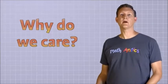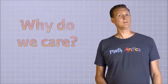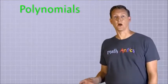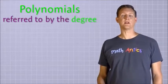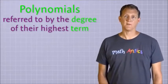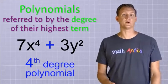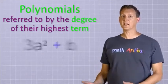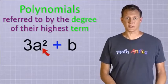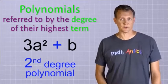Ok, but why do we care about the degree of terms? Well, it's because polynomials are often referred to by the degree of their highest term. If a polynomial contains a 4th degree term, but no higher terms, then it's called a 4th degree polynomial. But if its highest term is only a 2nd degree term, then it's called a 2nd degree polynomial.